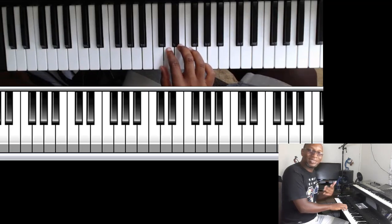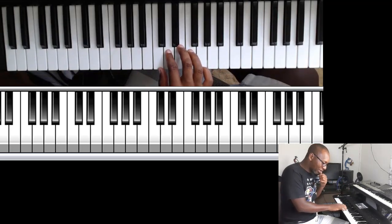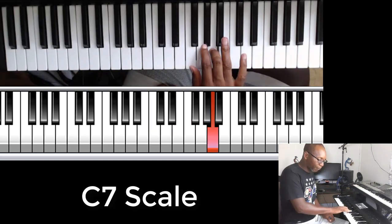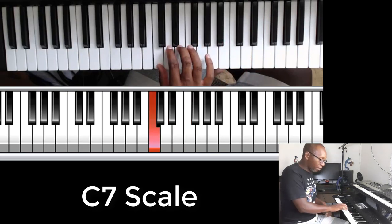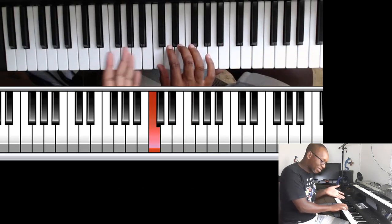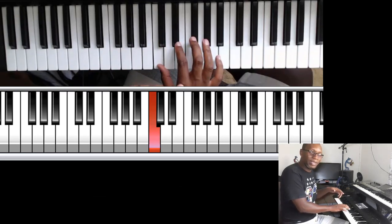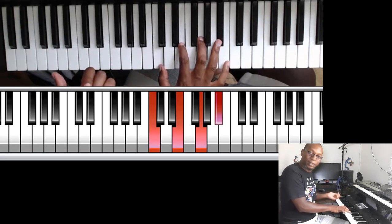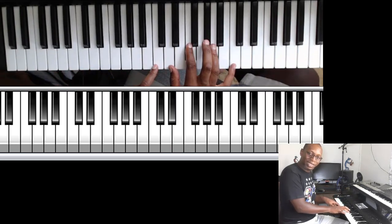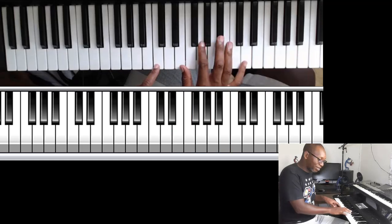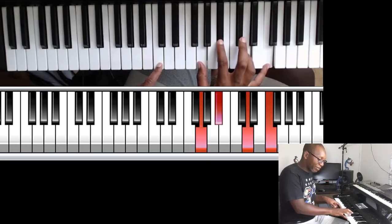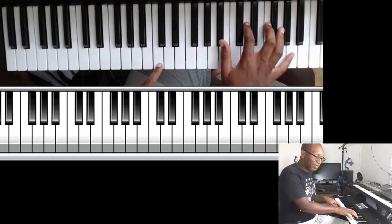Since I'm talking about a C7 scale, let me show you what it looks like. Here's a C dominant 7th scale — those are the seven notes. From each of these notes we get a 7th chord. So from the first note of the scale I can get this chord, from the second degree you get that chord, from the third degree I get that chord, from the fourth, from the fifth, from the sixth, and from the seventh.